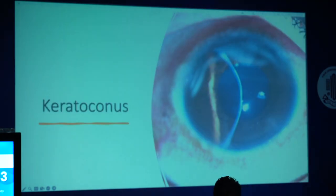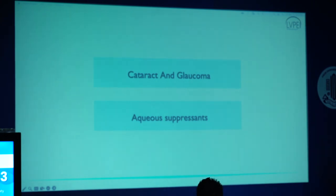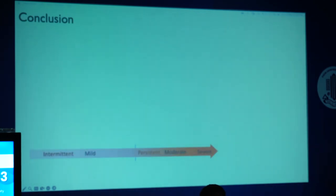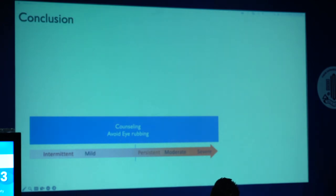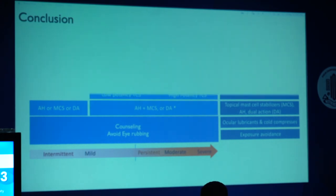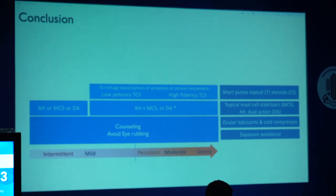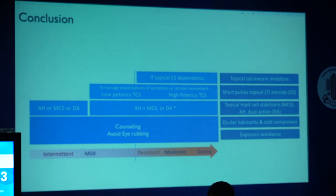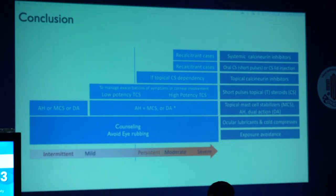Keratoconus is yet another association — it progresses very quickly and requires crosslinking earlier. Steroid-induced glaucoma is something that often gets missed, and we have to watch for these entities as well. To summarize: it is very important to understand the classification of the type of disease the patient presents with. All patients require counseling, advice against eye rubbing, and avoidance measures. Using antihistamines in isolation or mast cell stabilizers in isolation is not sufficient for moderate or severe chronic ocular allergy. These patients require short courses of topical steroids during the acute phase; if not responding, topical calcineurin inhibitors, then oral calcineurin inhibitors. Finally, severe cases require referral to higher centers.